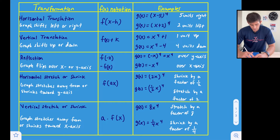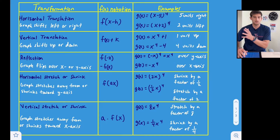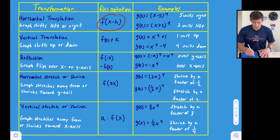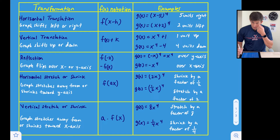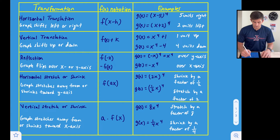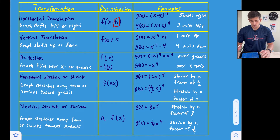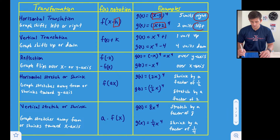Starting at the top: a horizontal translation shifts the graph left or right. The notation shows addition or subtraction happening directly with the x variable, and we use the variable h. With horizontal, we have to be careful — it's opposite of what it looks like. If we see x minus 5, we are actually going to the right. If we see x plus 2, we are actually going to the left.